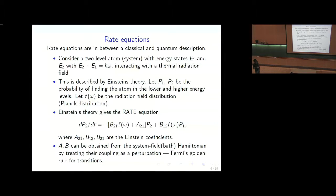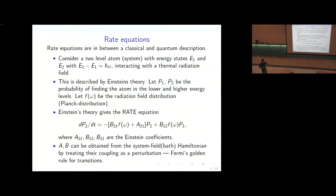The radiation field has some distribution given by the Planck distribution. Einstein's theory tells you that the rate at which the population of the lower level changes includes stimulated emission — the rate of transition from level two to level one, proportional to the radiation field density — and spontaneous emission, giving the rate of transition from two to one. Then there is the probability of transition from one to two, and these two differences give you the way the probabilities in the two levels change.